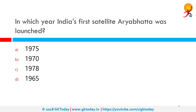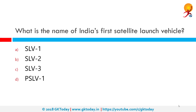In which year was India's first satellite Aryabhatta launched? India's first satellite Aryabhatta was launched from a Russian space station using the Cosmos 3M launch vehicle, on 19th April 1975.